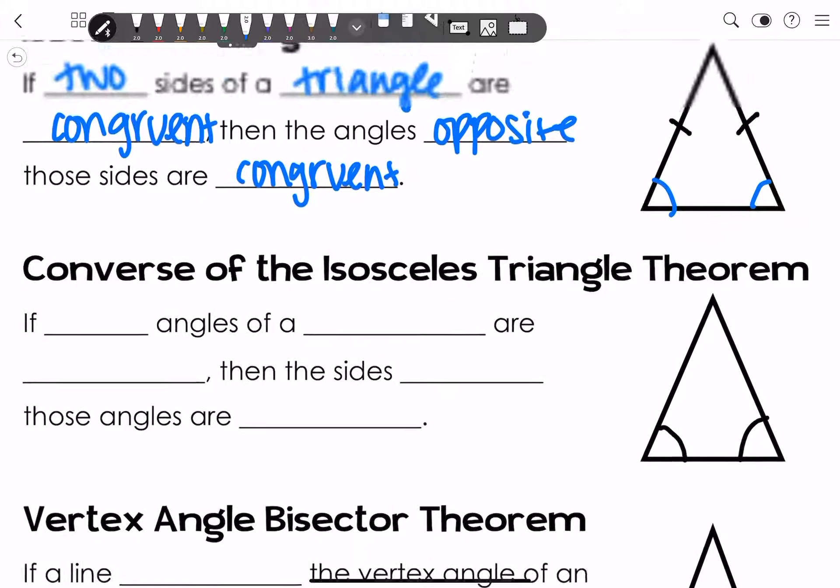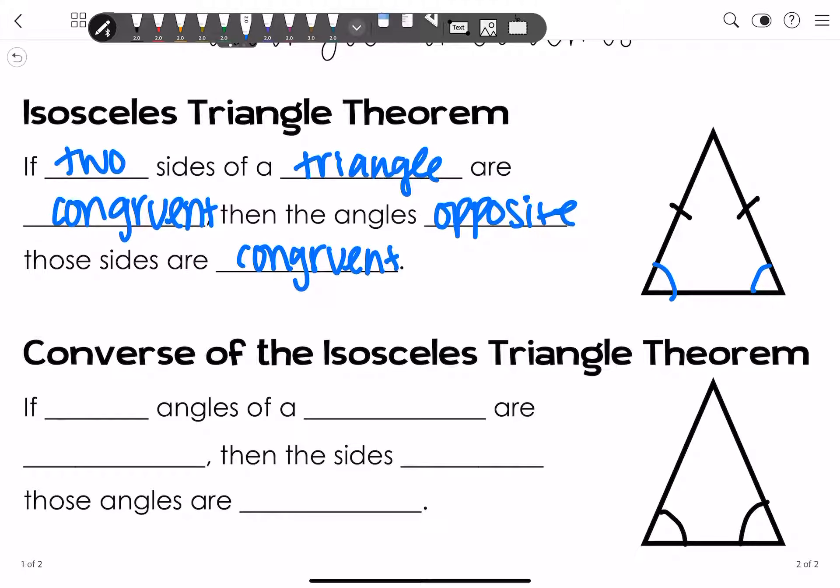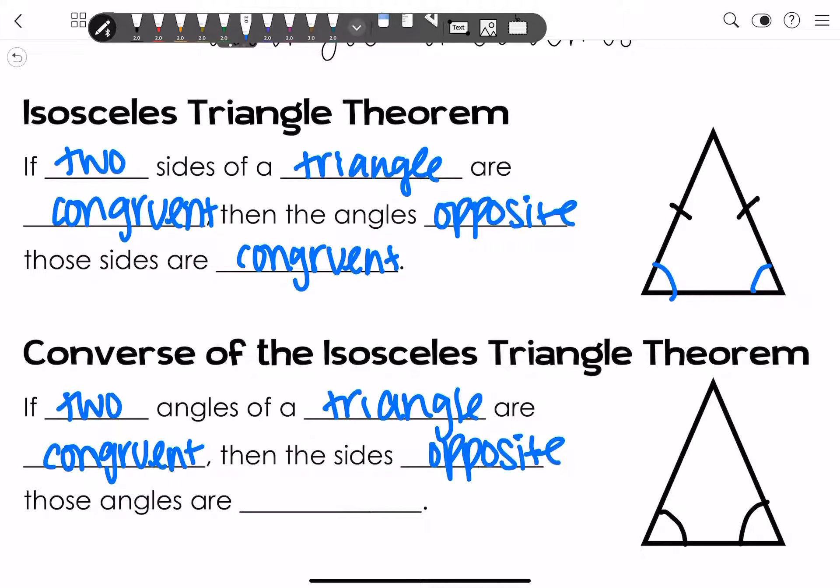The converse of the isosceles triangle theorem says the same thing, but in reverse order. Remember, you're just changing the order. Your conclusion becomes your hypothesis. If two angles of a triangle are congruent, then the sides opposite those angles are congruent as well. It's literally staring at it and pointing at it. If you've got those two base angles being congruent, then the legs of that isosceles triangle are also going to be congruent. That's how you'll be able to tell it's an isosceles.